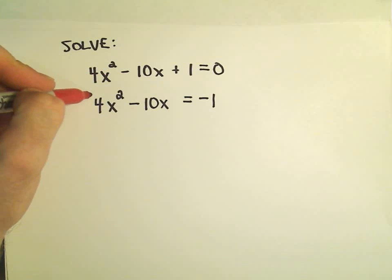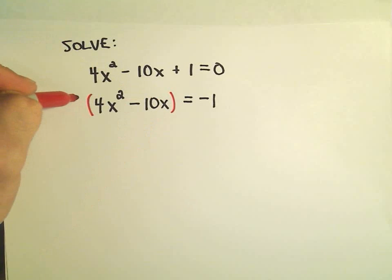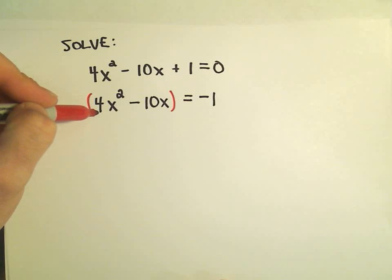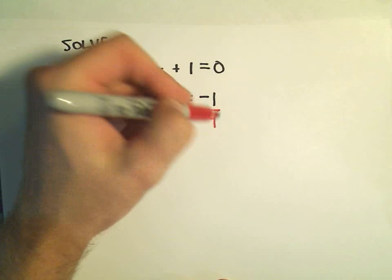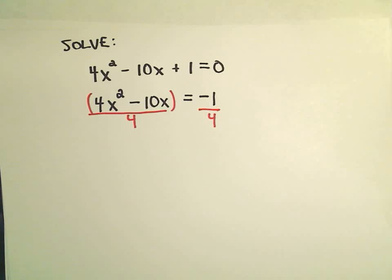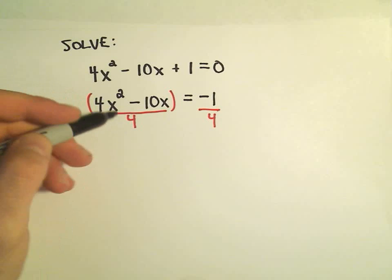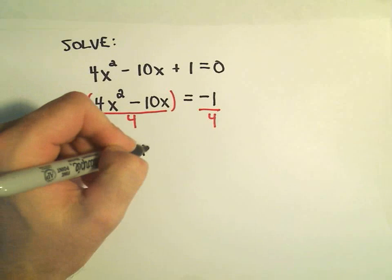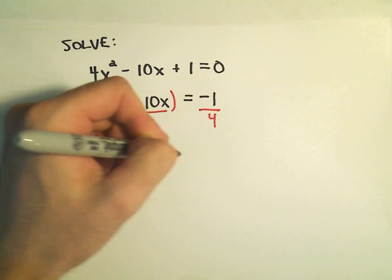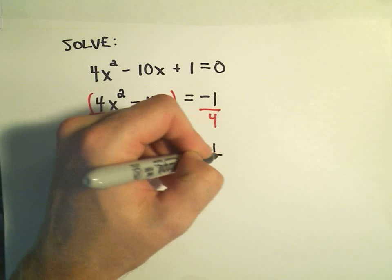Well, to do that, since I'm multiplying by 4, I'm going to divide both sides by 4. On the left side again, we have to be careful because really this would be 4x² over 4 minus 10x over 4. On the right side, we have -1/4.